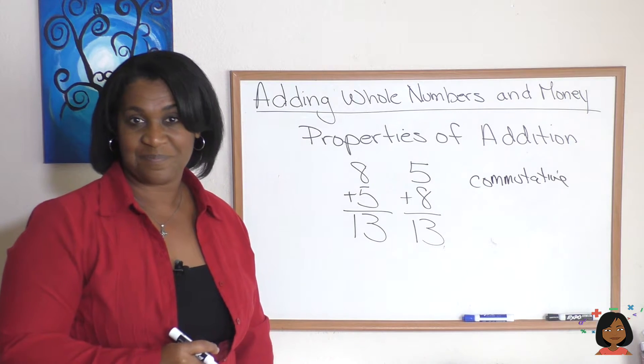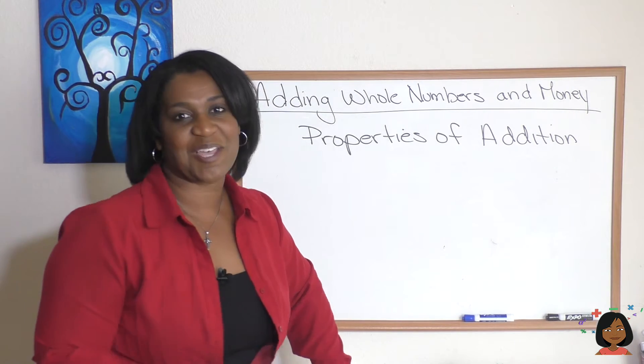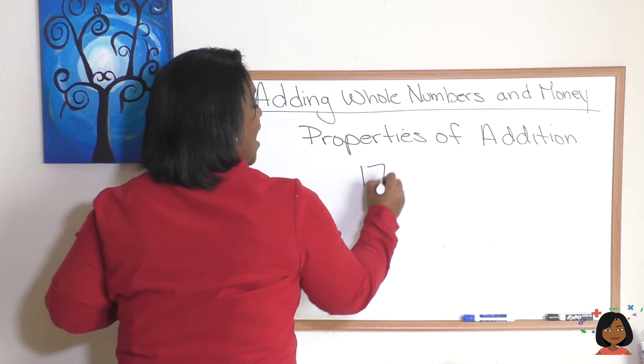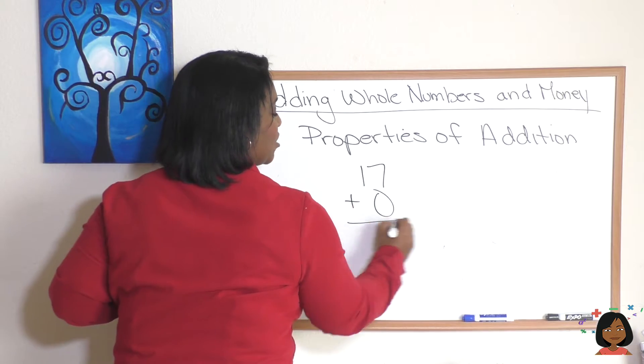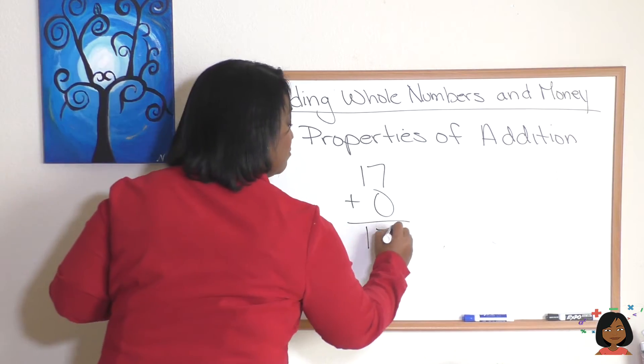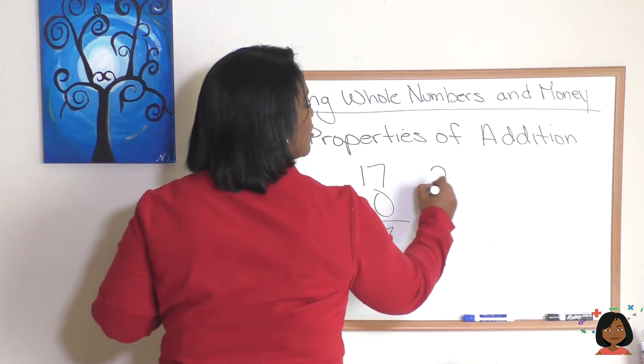I want to introduce you to one more property of addition. Take a look. Let's say I had a number like 17 and I decided to add zero to it. The answer is still going to be 17. Let's see if that works for a few other numbers. If I had a number 26 and I added zero to it, my number is still 26.